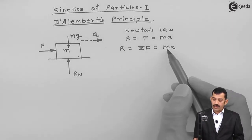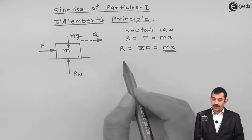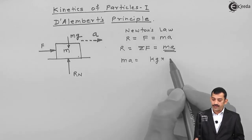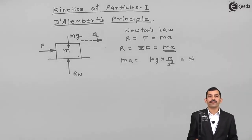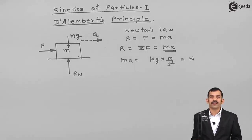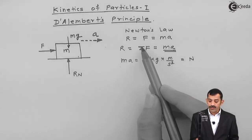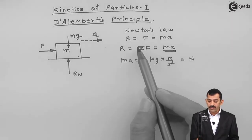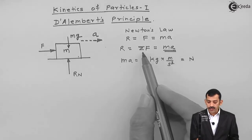Unit of force is Newton. Unit of mass is kg. Acceleration is in meters per second squared. The unit of m times A is kg into meters per second squared, which is nothing but Newton. That means the mA term on the right-hand side is also a force. If a body does not accelerate, resultant force is zero — that is a problem of static equilibrium. When the body accelerates, summation of forces equals mass into acceleration, which represents the resultant force equals mA.